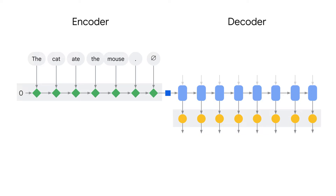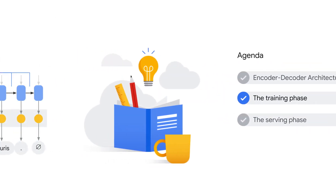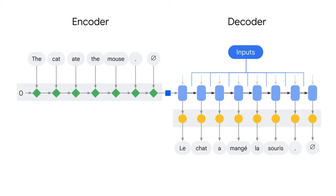Now that we have a high-level understanding of the encoder-decoder architecture, how do we train it? That's the training phase. To train a model, you need a dataset — that is a collection of input-output pairs that you want your model to imitate. You can then feed that dataset to the model, which will correct its own weights during training on the basis of the error it produces on a given input in the dataset. This error is essentially the difference between what the neural network generates given an input sequence and the true output sequence you have in the dataset.